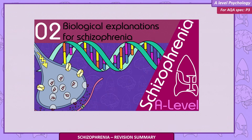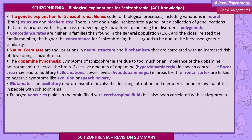Biological explanations of schizophrenia. The genetic explanation: genes code for biological processes, including variations in neural brain structure and biochemistry. There is not one single schizophrenia gene, but a collection of gene locations associated with a higher risk — meaning the disorder is polygenic. Concordance rates are higher in families than the general population rate of 1%, and the more closely related the family member, the higher the concordance, argued to be due to increased genetic similarity.